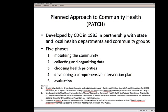The first approach is called the Planned Approach to Community Health, or PATCH. This was developed by the Centers for Disease Control and Prevention in 1983, in partnership with state and local health departments and community groups. This approach consists of five phases: first, mobilizing the community; second, collecting and organizing data about the community; third, choosing health priorities through reviewing data and discussions with the community; fourth, developing a comprehensive intervention plan to address the health priorities; and finally, an evaluation of efforts to address the health priorities that have been identified and for which interventions were developed and implemented.